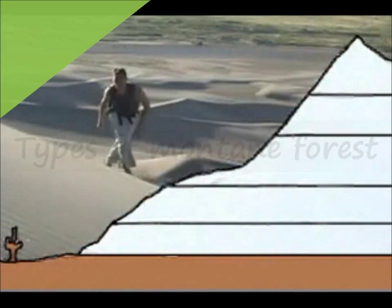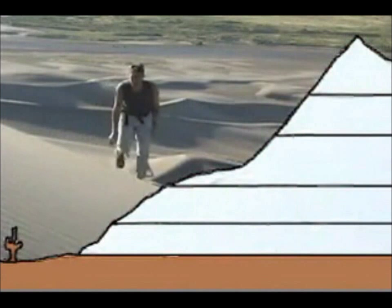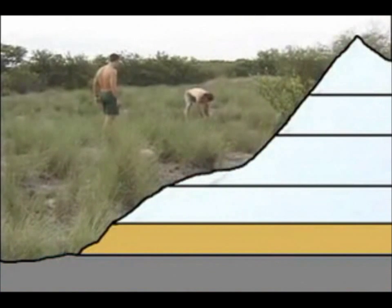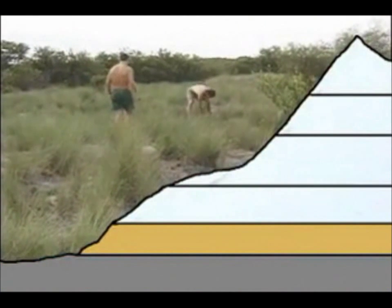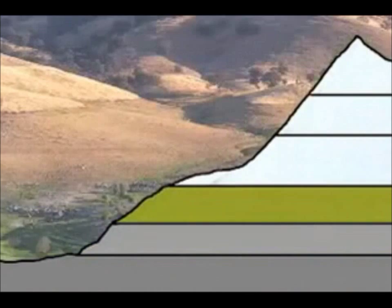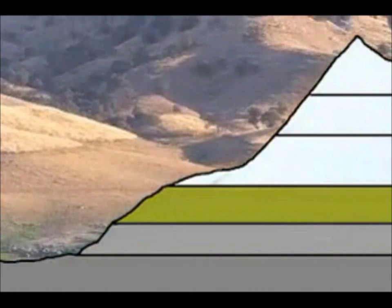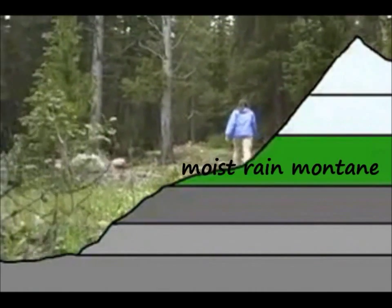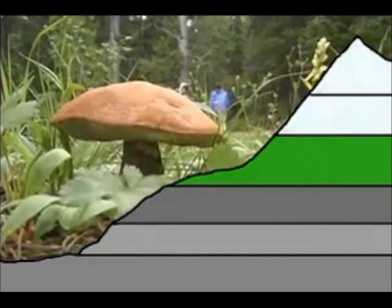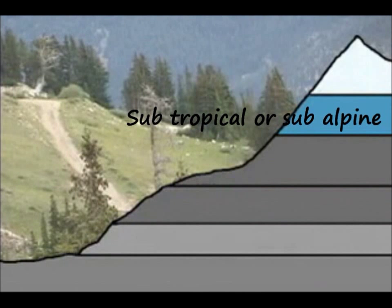From the dry deserts, one can walk up in elevation into desert shrub. Walk higher and reach the foothills of the mountains. From here, montane forests of pines dominate. Higher up, a subalpine forest of primarily spruces and firs creates the last treed vegetation type.